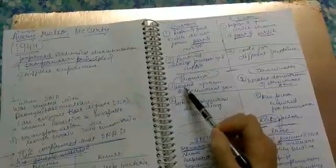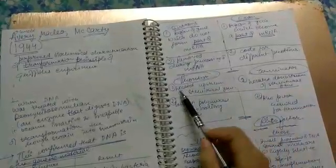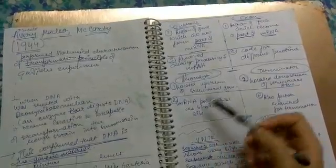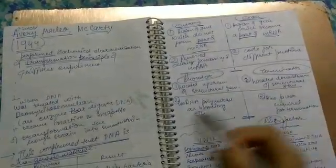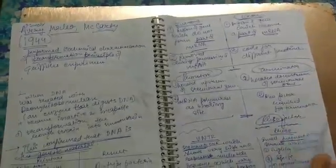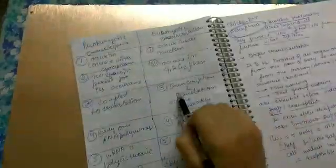Promoter versus terminator. Promoter is located upstream of structural gene, while terminator is located downstream of structural gene. Promoter acts as RNA polymerase binding site. Rho factor is required for termination in prokaryotic systems.